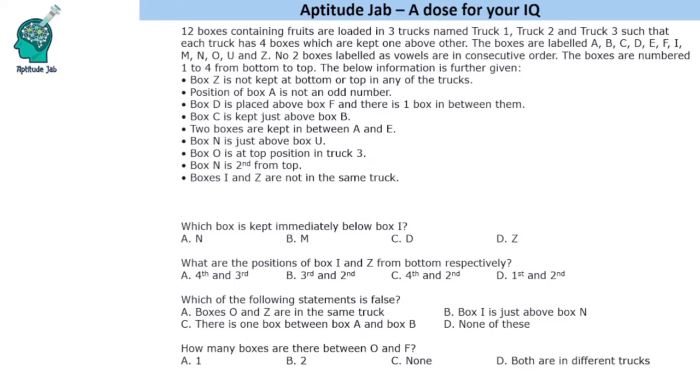Hello everyone, welcome to Aptitude Jab. This set says that there are 12 boxes containing fruits. They are loaded in 3 trucks 1, 2 and 3 and each truck has 4 boxes kept one above the other and the boxes are numbered 1 to 4 from bottom to top.